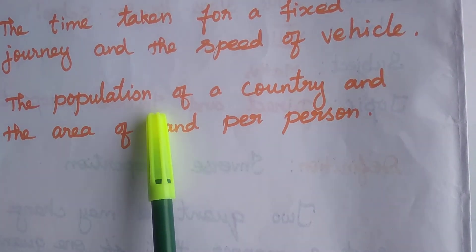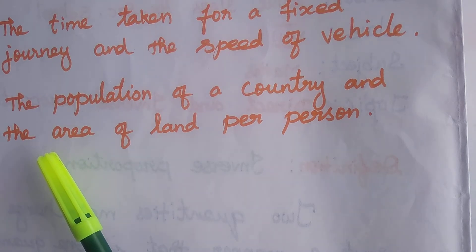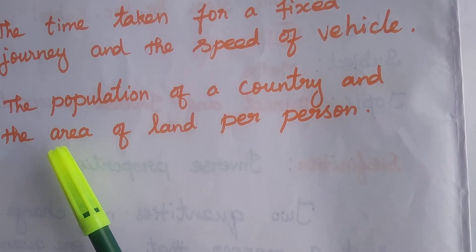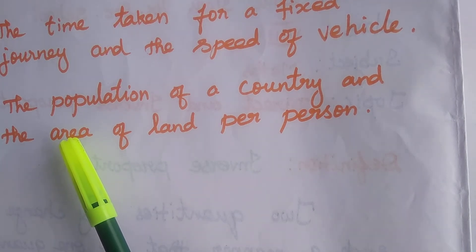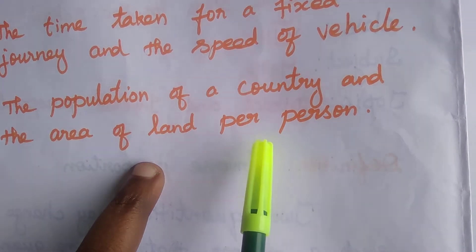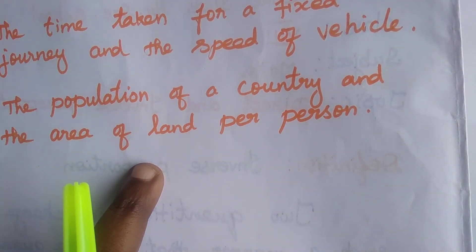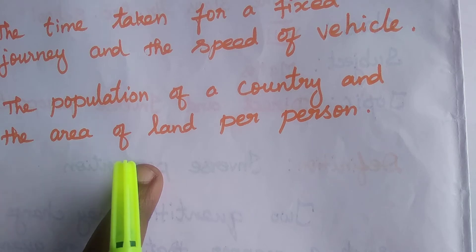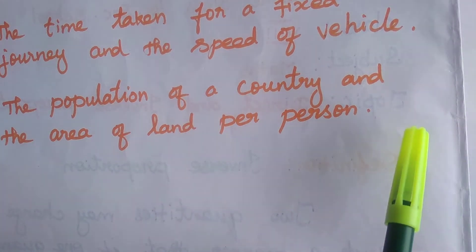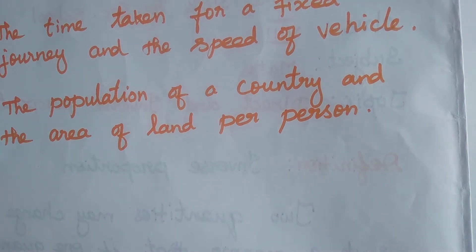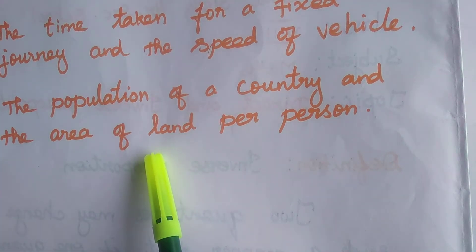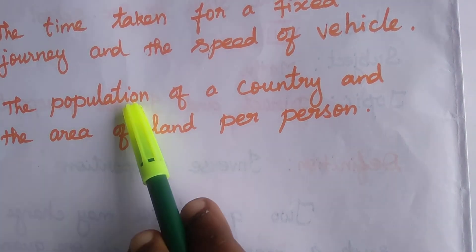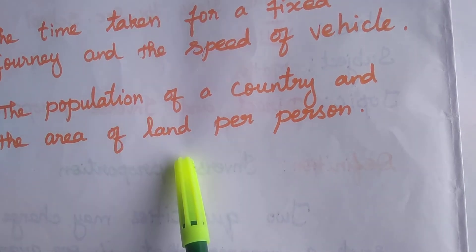Next statement: the population of a country and the area of land per person. If the population of a country increases, the area of land per person will decrease. If the population decreases, the area per person will increase. So it is inverse proportion.